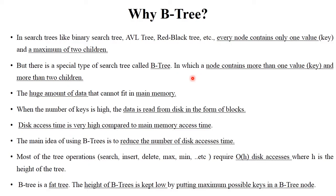First, why do we use B-tree? In other binary search trees like AVL and red-black tree, each and every node can store only one value and it has a maximum of two children. But in B-tree we can store more than one value in one node and it has more than two children. This is the main difference between binary search tree and B-tree.